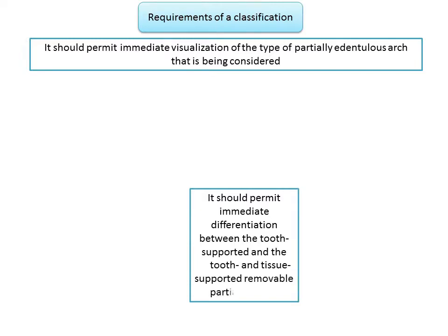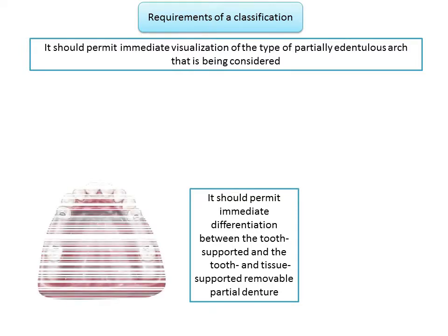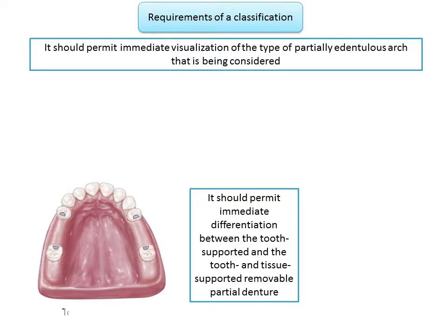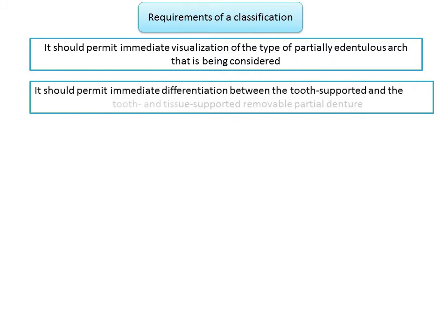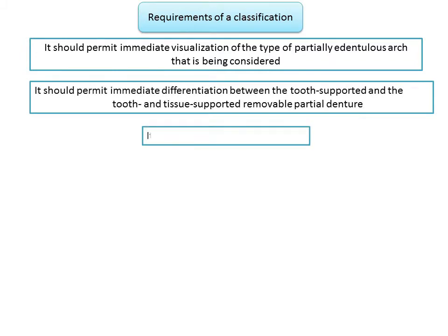A classification should permit immediate differentiation between the tooth-supported and the tooth-and-tissue-supported removable partial denture. A tooth-supported RPD receives support from natural teeth at each end of the edentulous space, whereas a tooth-and-tissue-supported RPD has the denture base extending anteriorly or posteriorly, supported by teeth at one end and tissue at the other — termed a distal extension partial denture. The classification should also be universally acceptable.